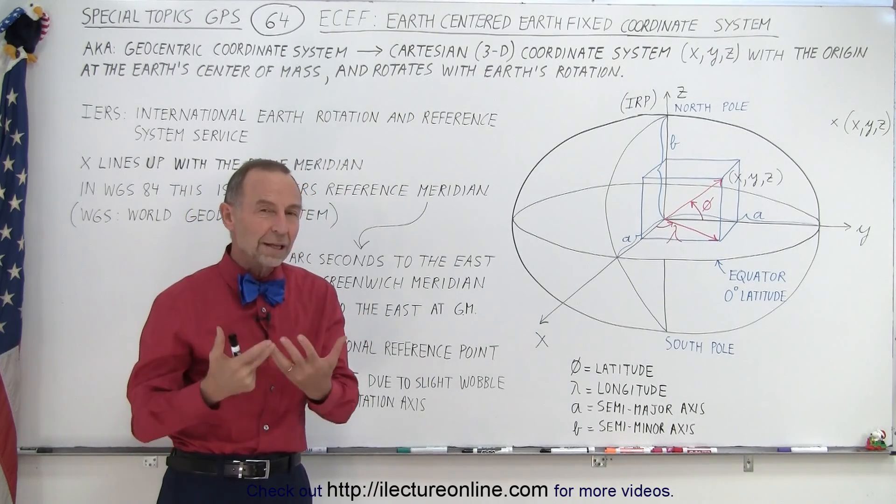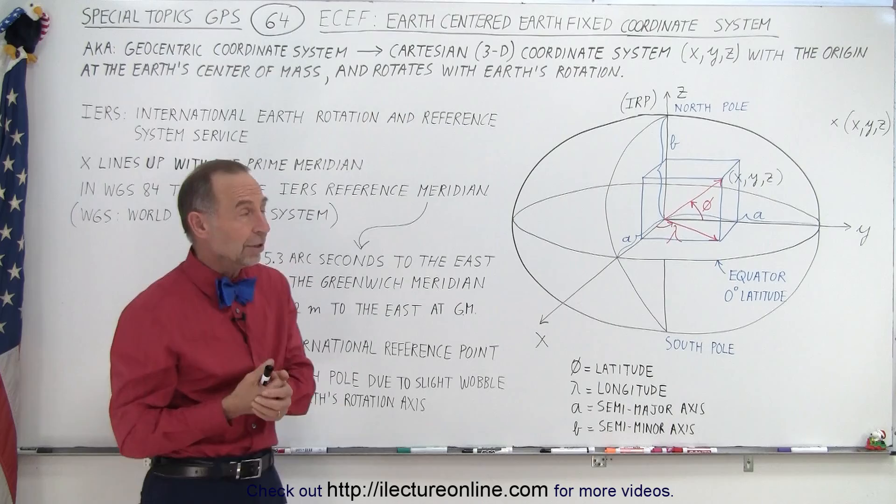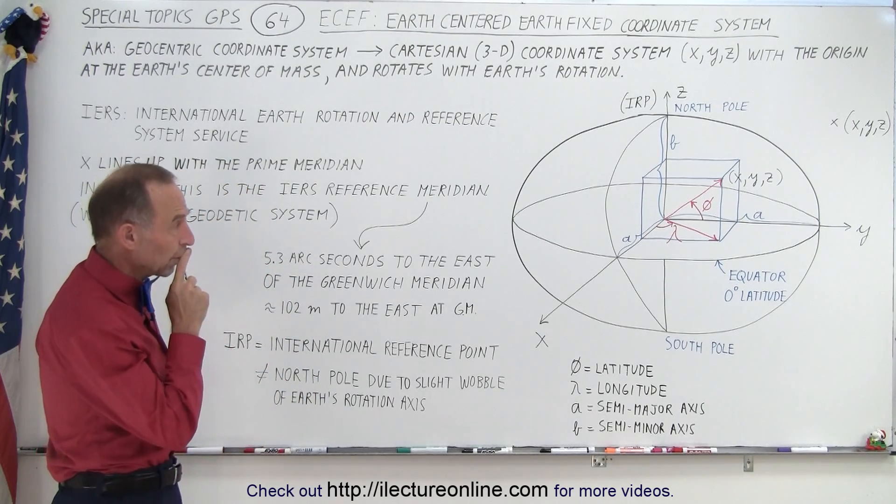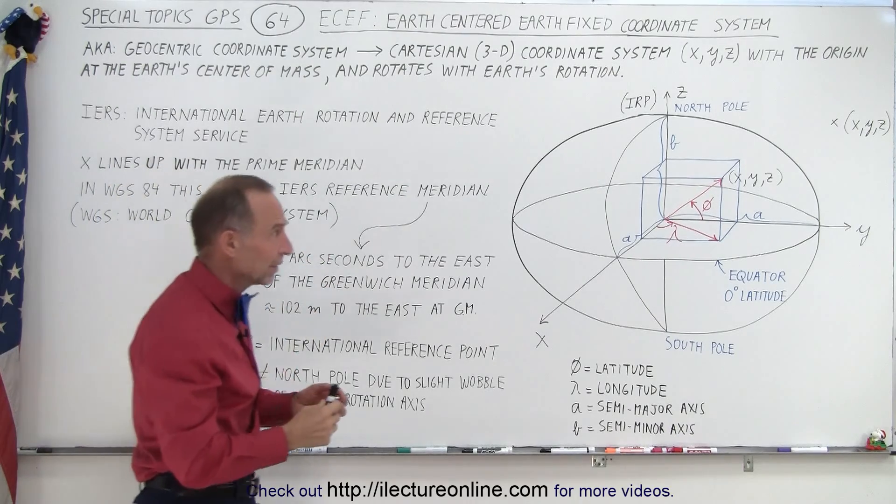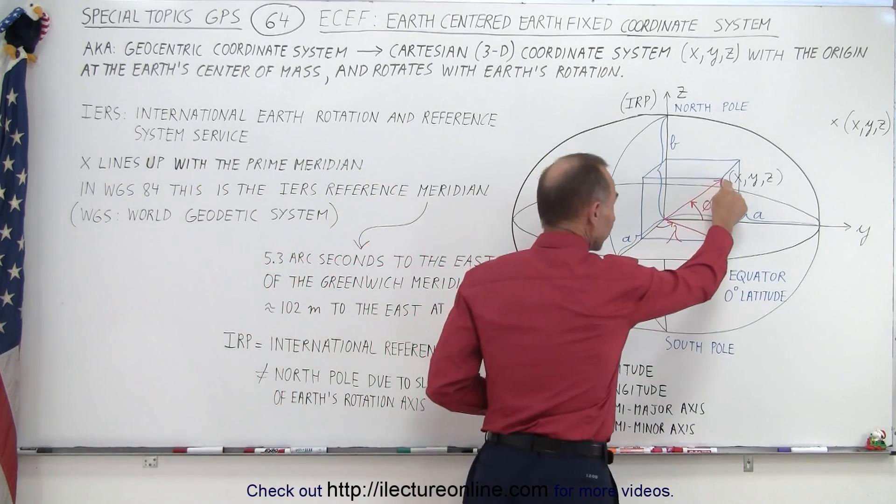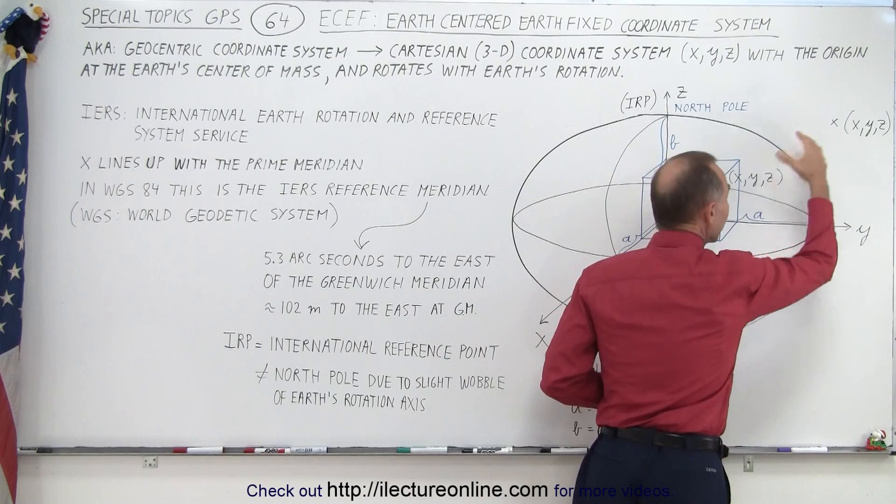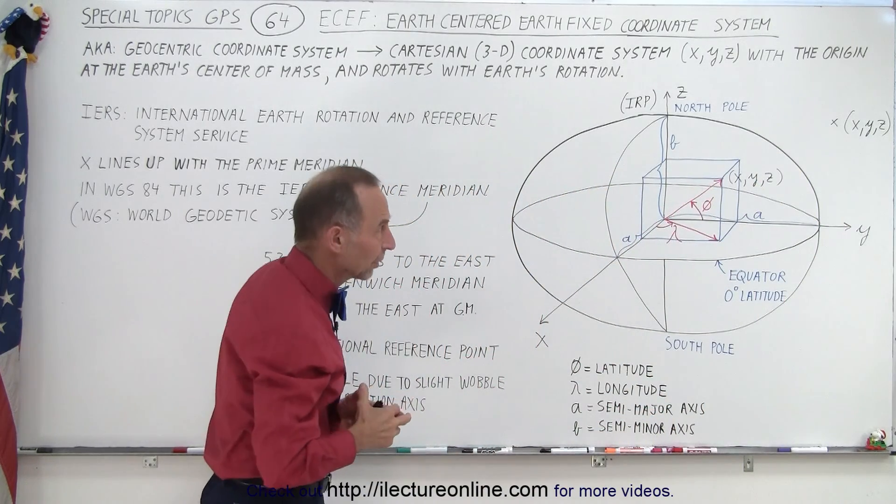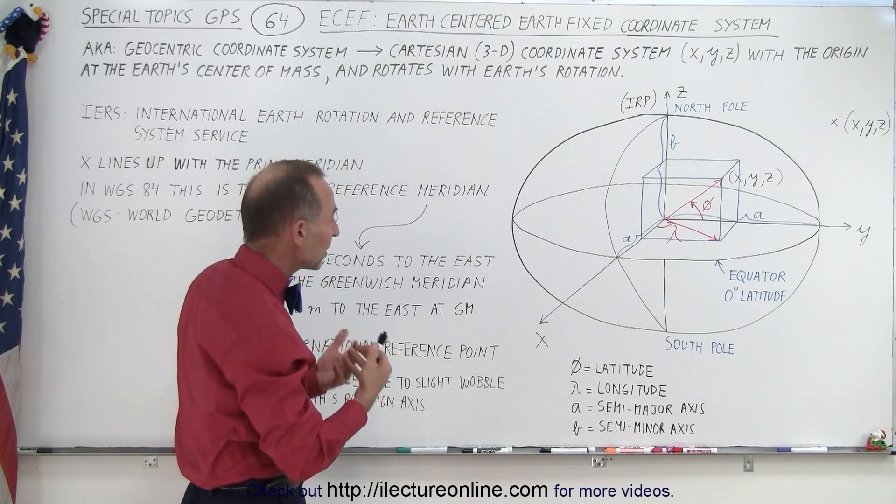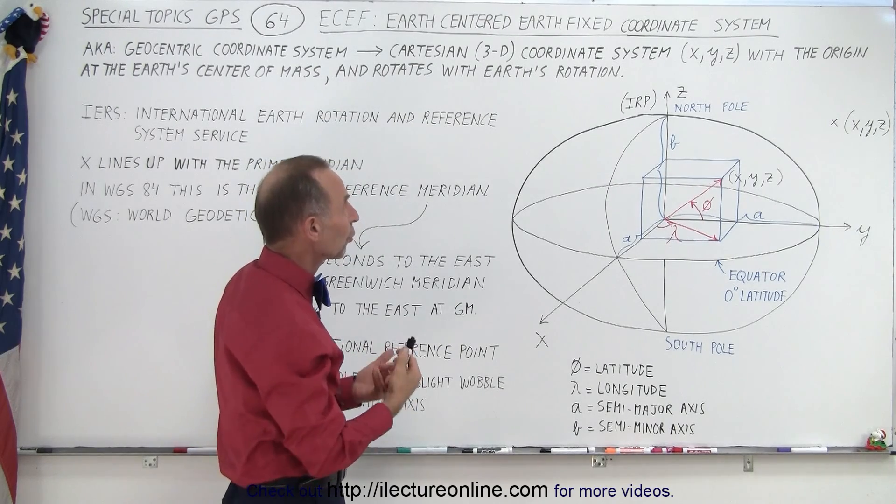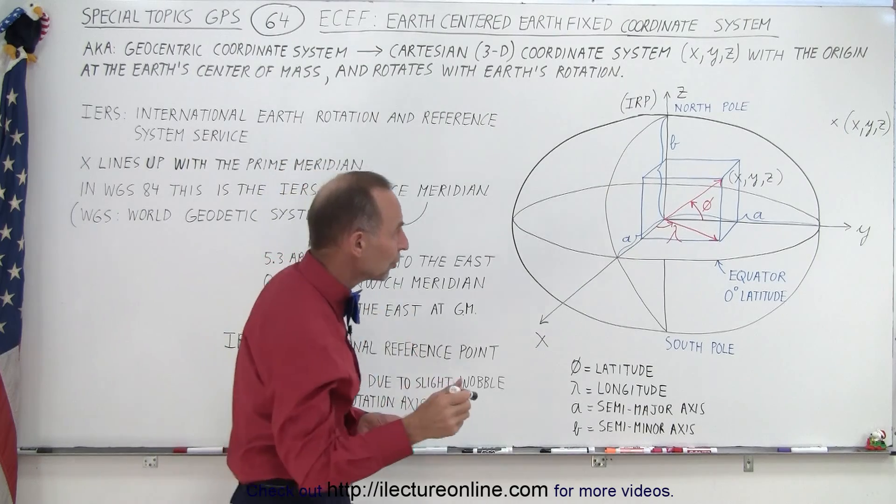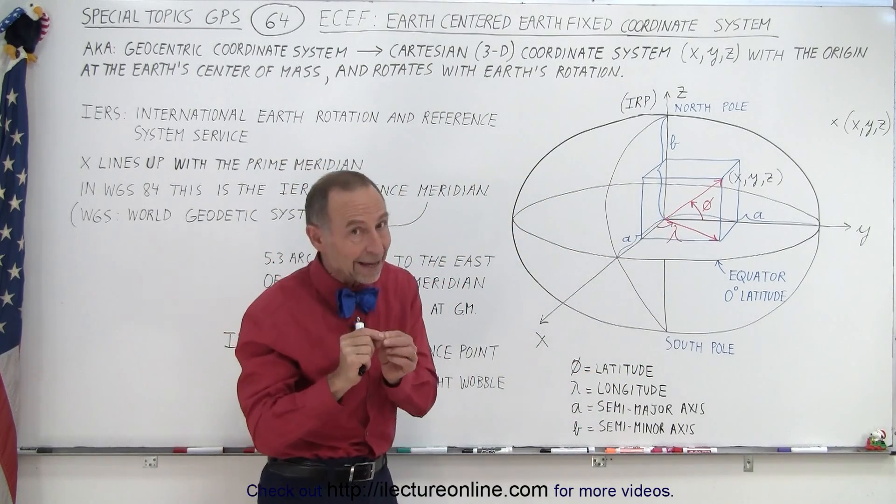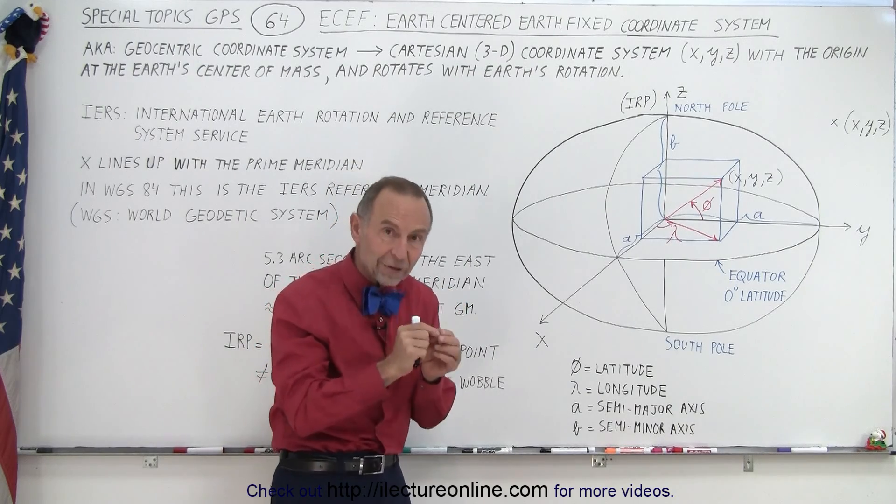So we need to understand how the coordinate system works. Here we've drawn the earth, but notice that we can look for a point on the earth's surface or point in space relative to the earth and we use the same coordinates for that. It's the XYZ coordinate, so it's essentially a three-dimensional Cartesian coordinate system with the origin at the center of mass of the earth, which may not be exactly at the geographical center of the earth.